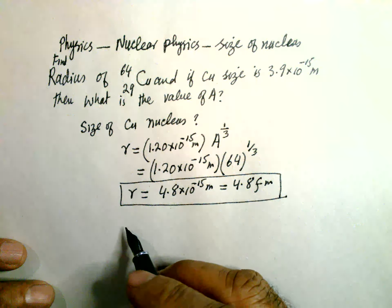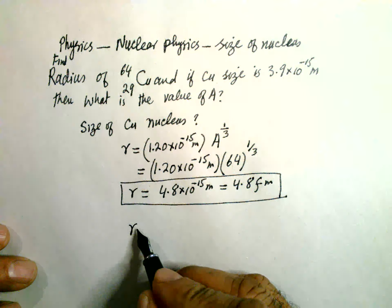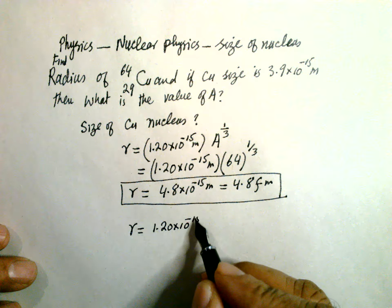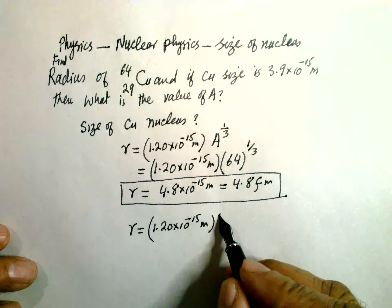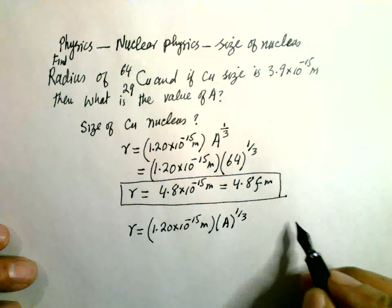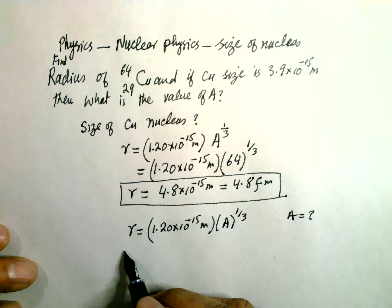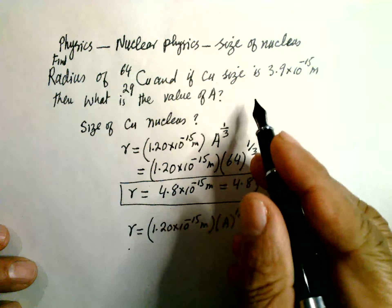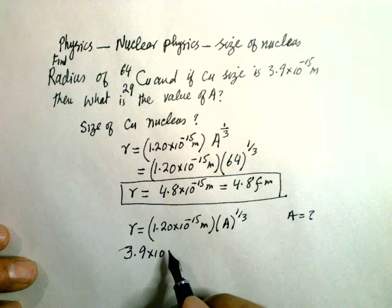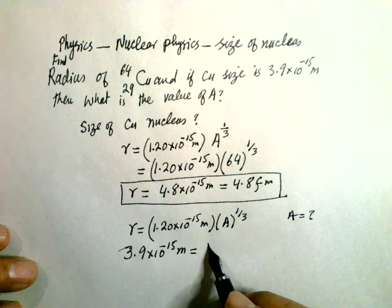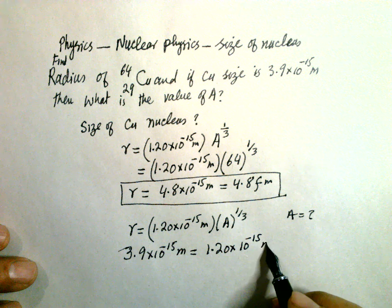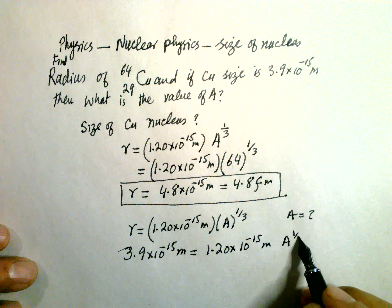So this is the first part. And for the second part, if R is given as 3.9 × 10⁻¹⁵ meter and we have to find the value of A — so 3.9 × 10⁻¹⁵ meter is equal to 1.20 × 10⁻¹⁵ meter into A raised to power one-third.